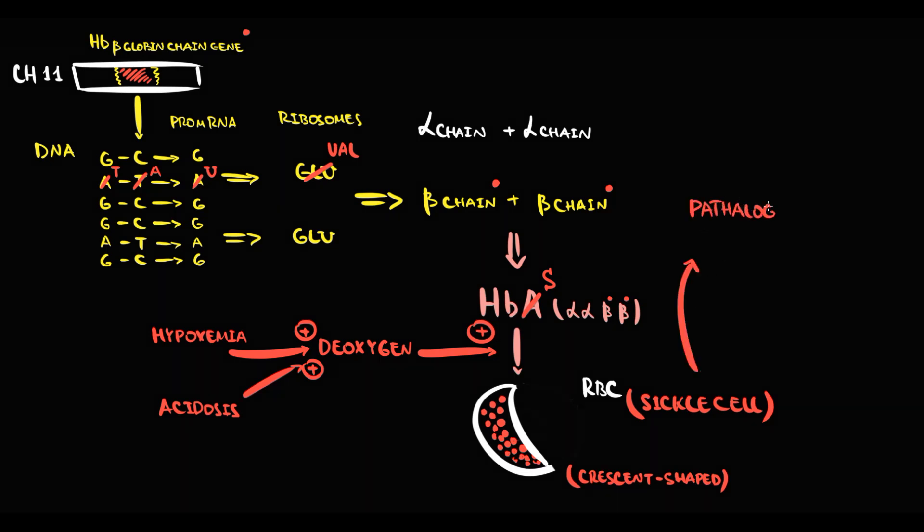Sickle cells are pathological to our organism. Human organism knows how to operate with normal red blood cells. But sickle cells have a unique shape, and this creates two huge problems.